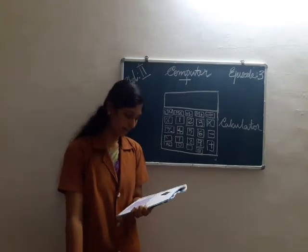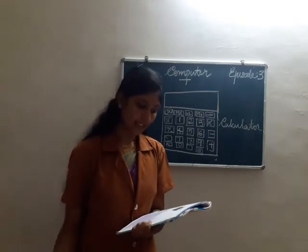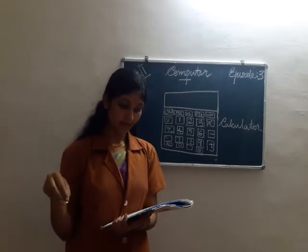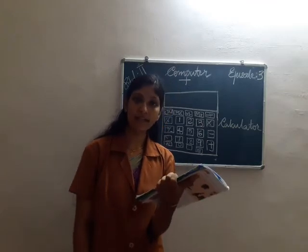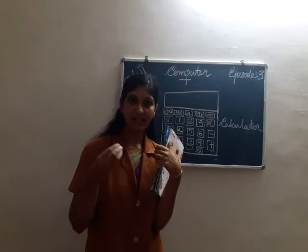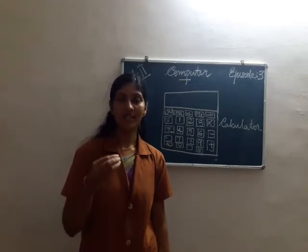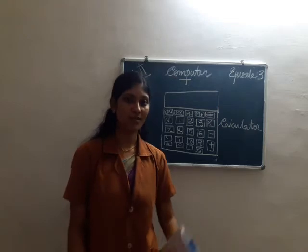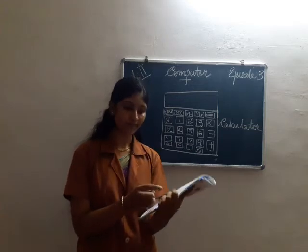Another worksheet: Isha has written some sentences. Help check which are wrong and which are correct. Tick the correct sentence and cross the wrong sentence. First question: machines make work difficult for a person. Is a machine difficult for a person? No — machines are used to make our work easy and machines are invented for humans. So it is false — put a cross mark in this box.